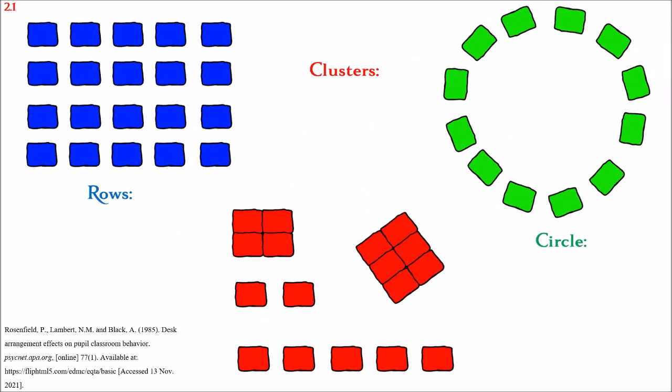A study in 1985 measured the behavior in relation to these layouts. The first positive behavior is listening. Join class rows scored an average of 11.85, clusters scored an average of 11.72, and circles scored an average of 12.40. These results show that the best of these three layouts is the circle, with the worst being clusters.